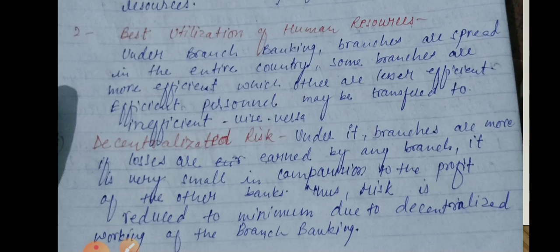The second point is the best utilization of human resources. Under branch banking, branches are spread in the entire country. Some branches are more efficient and some are lesser efficient. Efficient personnel may be transferred to the inefficient branches and vice versa. So efficient workers are sent to those branches where work is not going properly and loss is occurring, while inefficient workers are shifted to developed, profit-making branches so that resources are best utilized.